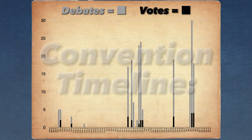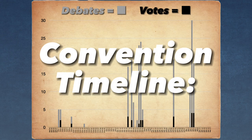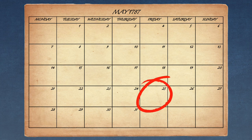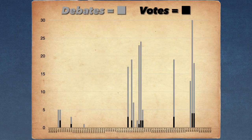A timeline of the debates and voting at the Constitutional Convention related to the appointment of the president is as follows. The first day of the convention began on May 25, 1787. This timeline graph indicates all debating and voting regarding the selection of the president for the entirety of the convention, which spanned from late May to the middle of September.